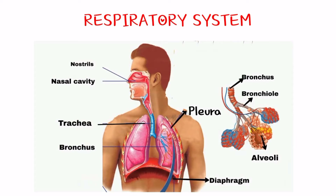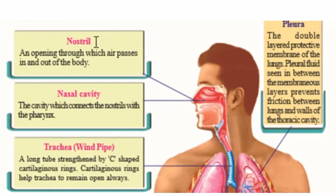We already learned how we get nutrients from food by the process of digestion. Now, how do we get oxygen? Oxygen is obtained through the respiratory system. This respiratory system helps oxygen intake from atmospheric air into the body. It consists of nostrils, nasal cavity, trachea, bronchus, and diaphragm. The main part of the respiratory system is the lungs, which are protected by a double-layered membrane called the pleura. There is also a pleural fluid between the membranous layers that prevents friction between the lungs and the wall of the thoracic cavity.